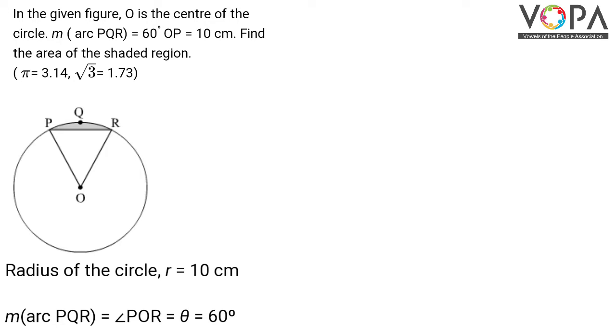First, we write the radius of the circle, r = 10 cm, and major arc PQR equals the central angle ∠POR = θ = 60 degrees.